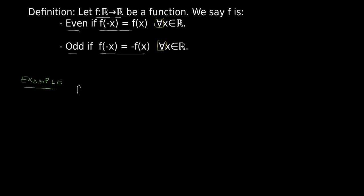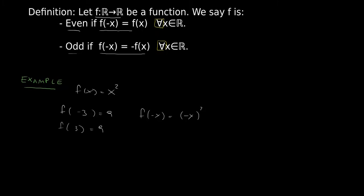So let's see this definition with an example. If we define f of x to be equal to x squared, then when we evaluate f at 3 and minus 3, we get that f of minus 3 equals minus 3 squared, which is 9, and f of 3 equals 3 squared, which is also 9. So we might think f is even. Let's try evaluating it at minus x: f of minus x equals minus x squared, and minus x squared equals x squared, which is our original function f of x. So f of minus x equals f of x, and therefore f of x is even.